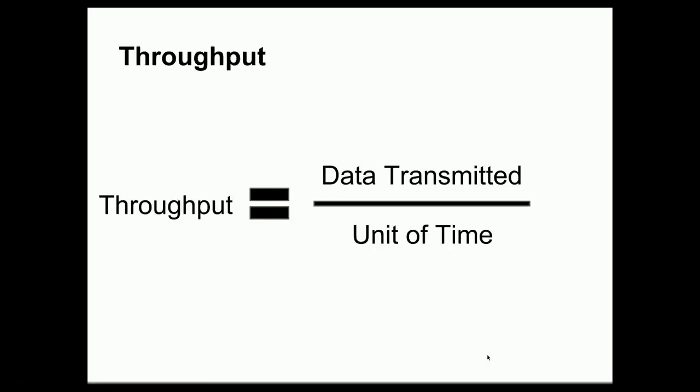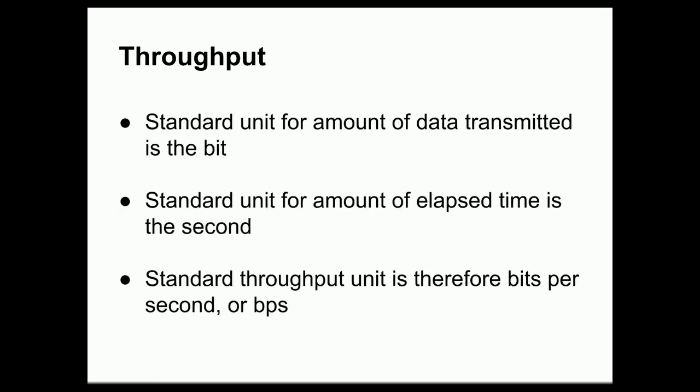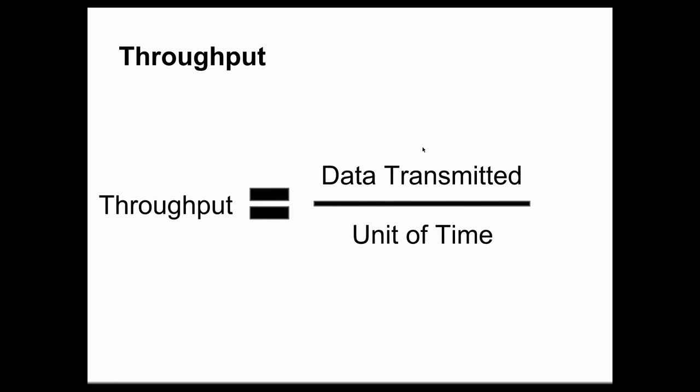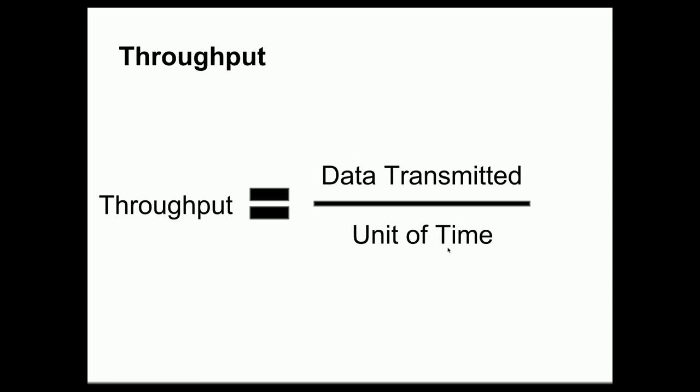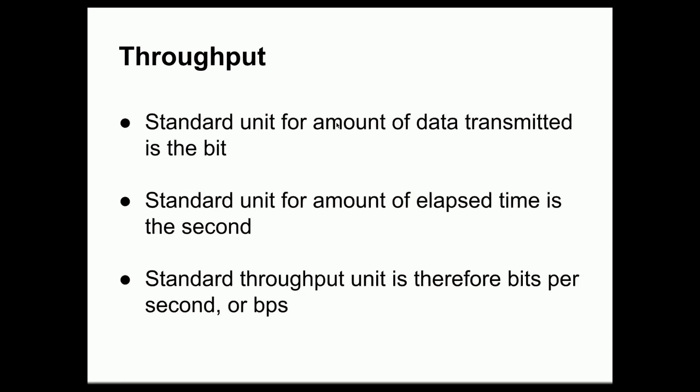So now that we have the fundamental unit of data, we can measure throughput. Throughput is a very simple equation. Throughput is equal to the amount of data that we transmit per unit time. So throughput is equal to data transmitted, the quantity of data transmitted, divided by whatever time unit we're using. The standard unit that we use for the amount of elapsed time is the second. So we normally measure throughput in bits per second, and we can use SI or IEC prefixes in order to give us a convenient shorthand for units of thousands or millions and so forth, bits per second to BPS.